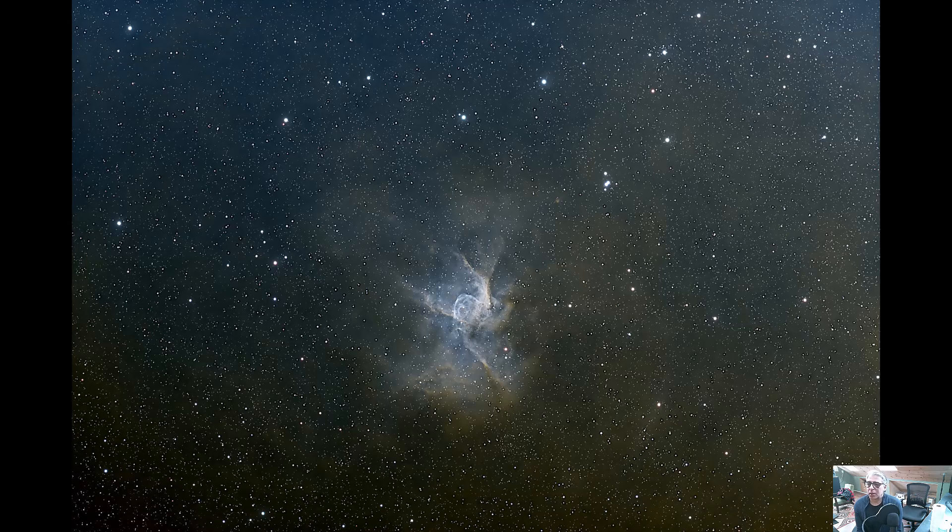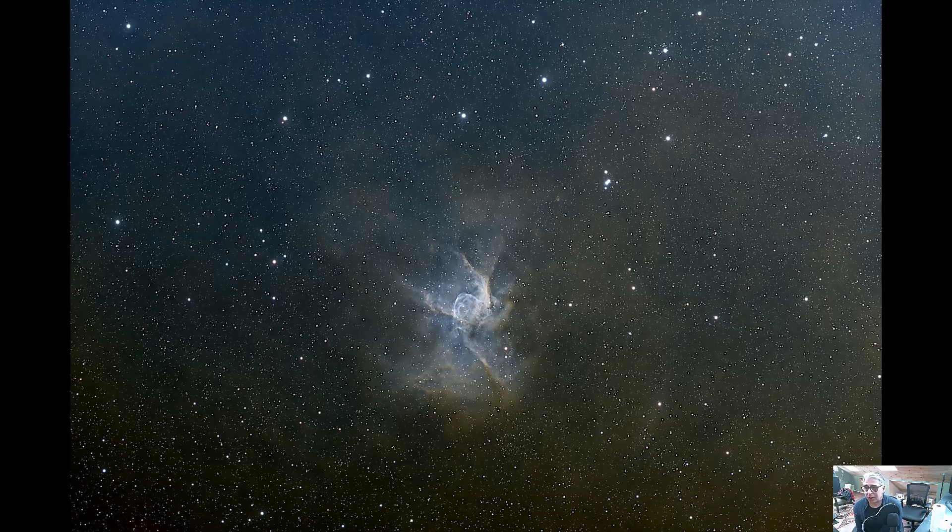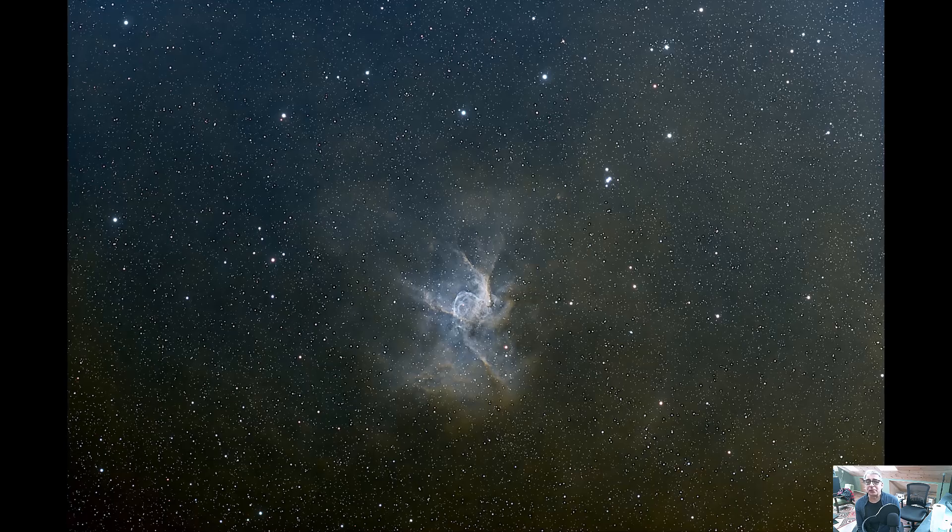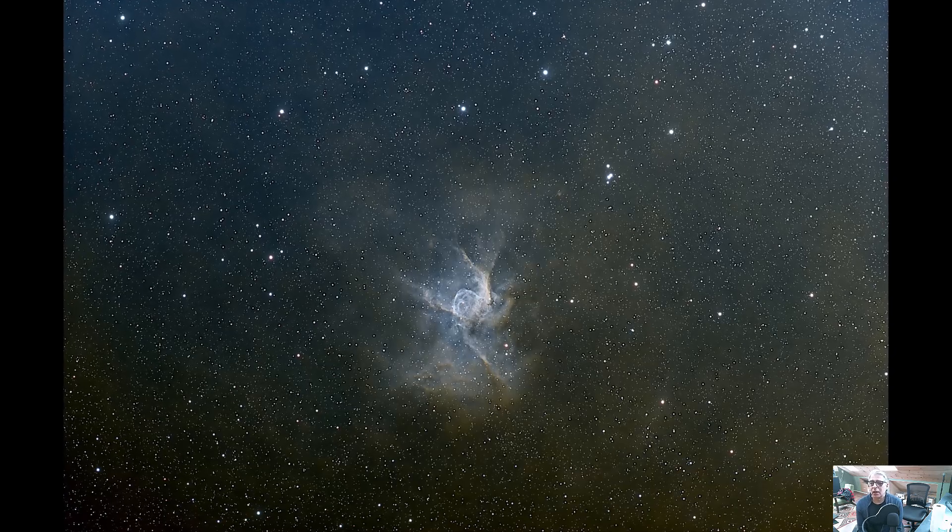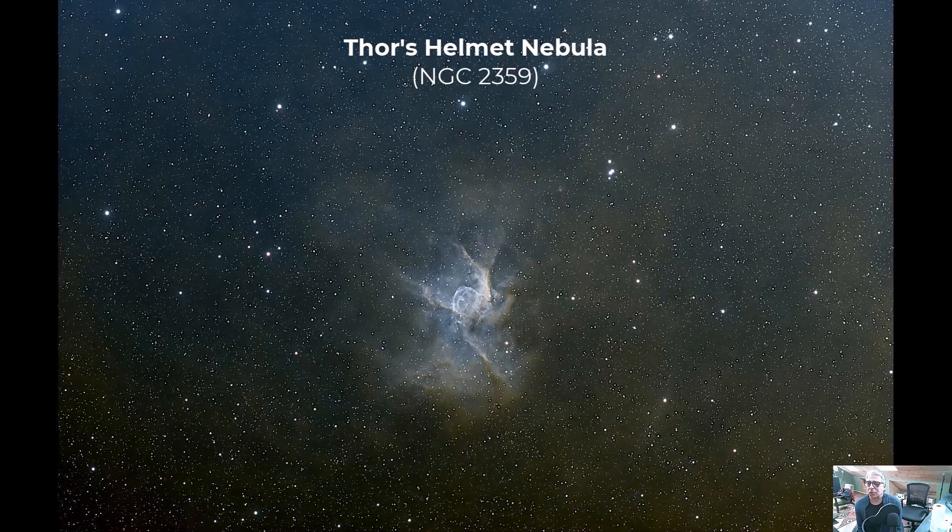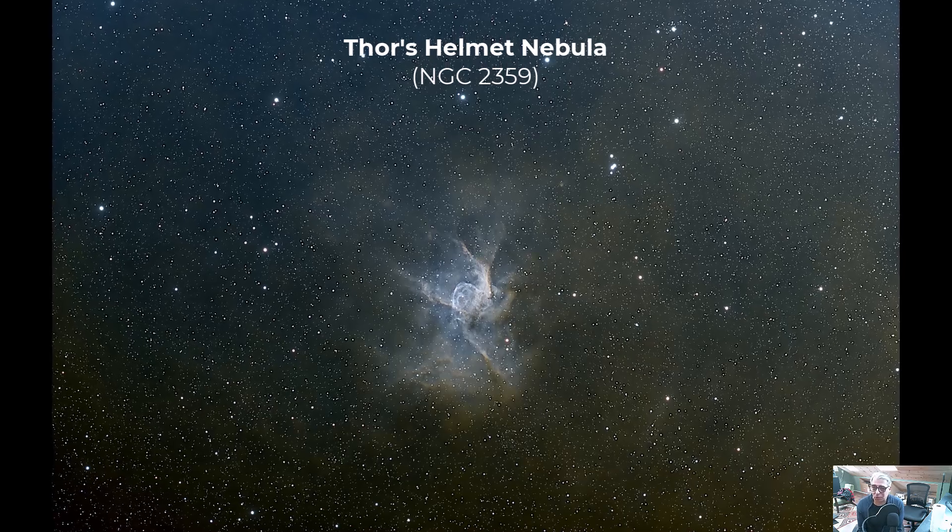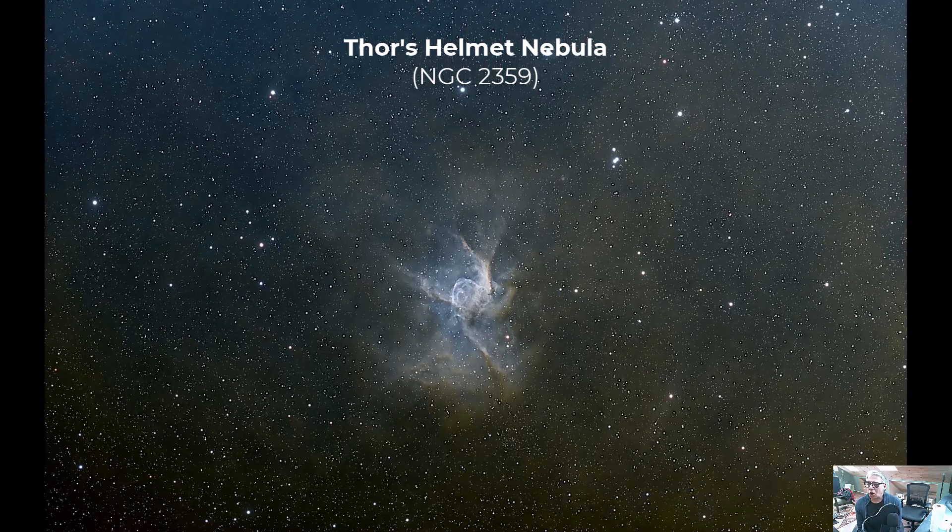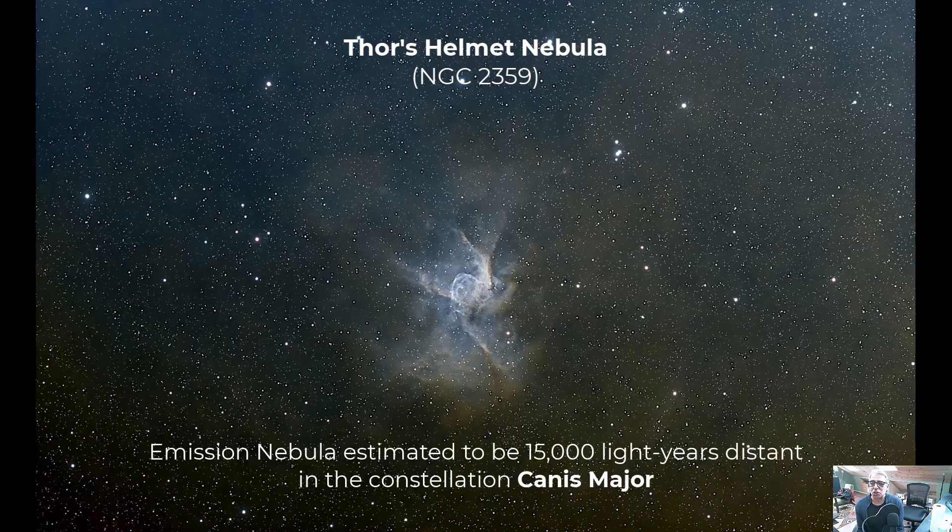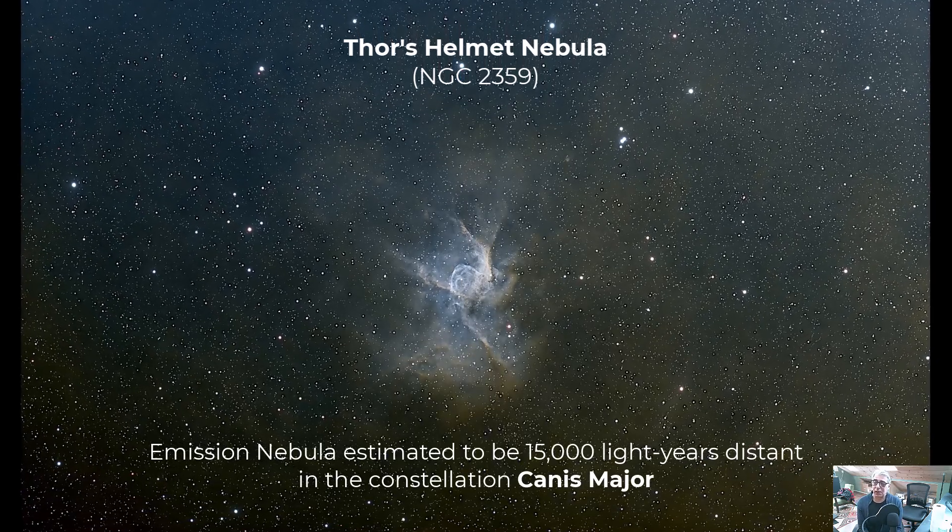So today I want to do a quick video. I'd like to just share an image of the Thor's Helmet Nebula that I took with my AstroTek 115 EDT telescope. Thor's Helmet Nebula is also known as NGC 2359 and it's a large and relatively bright emission nebula located in the constellation of Canis Major.